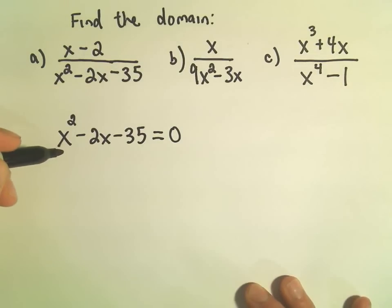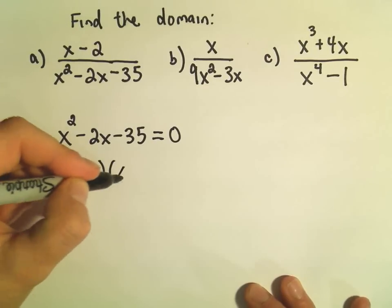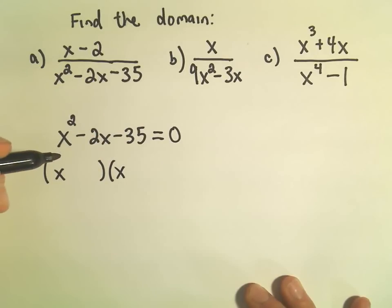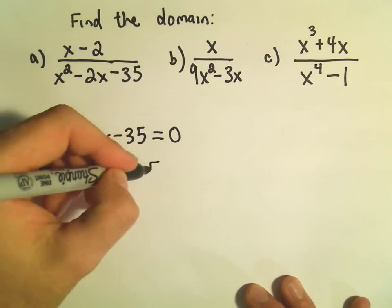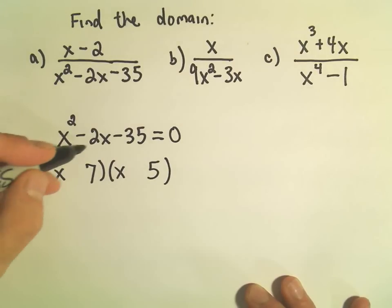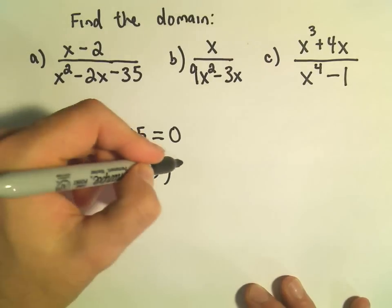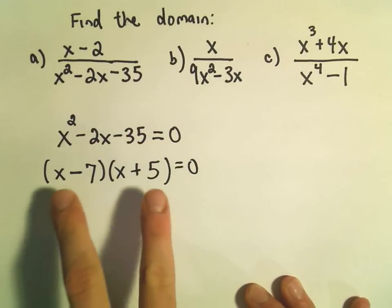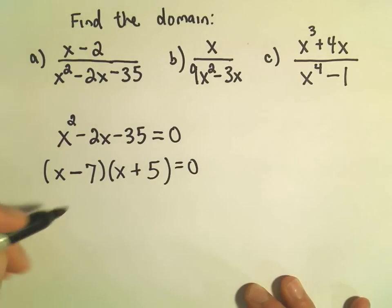So x² - 2x - 35, I think we can factor that. So I need two numbers that multiply to negative 35, but add up to negative 2. So I think some combination of 7 and 5 will work. Since the middle term is negative, that means the bigger of these two numbers gets the negative sign. All right, I think that looks like a correct factorization.